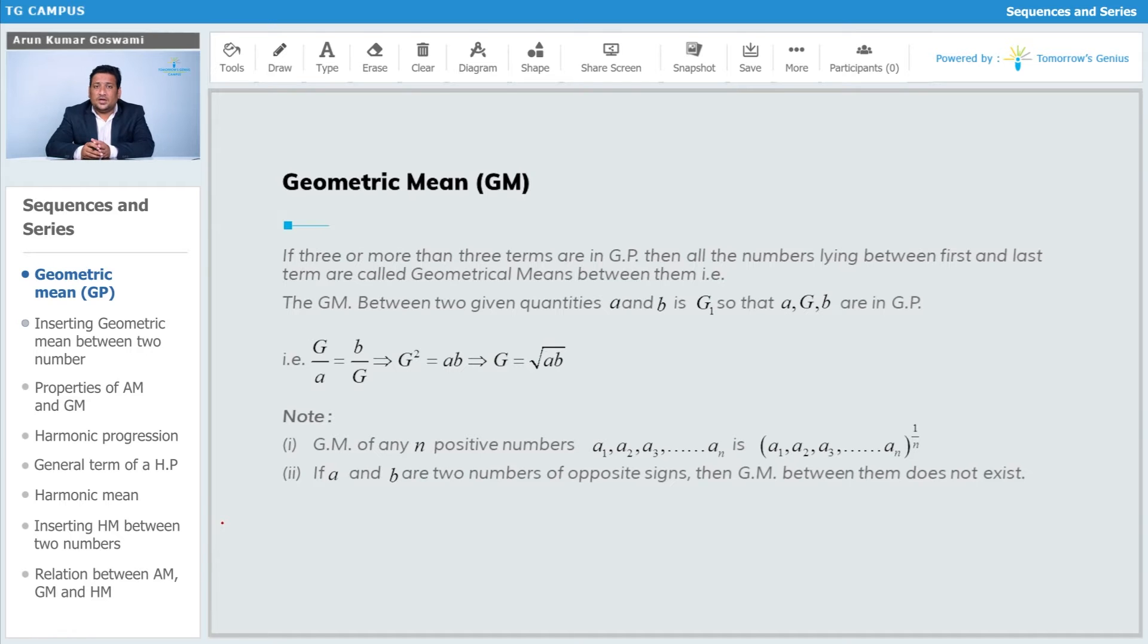There was common difference in AP and common ratio in GP. Basically, I'm talking about arithmetic progression having common difference and geometric progression having common ratio.